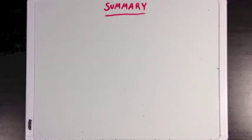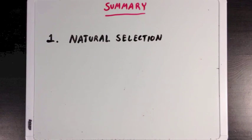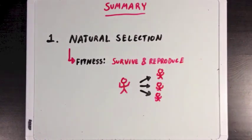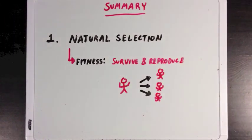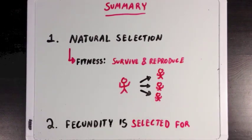So, what did we learn? First we learned that natural selection will select for individuals with traits that give them high fitness. And we can divide fitness into traits that will help with survival and traits that will help with reproduction, which are those that increase fecundity. Second, we learned that fecundity is selected for by natural selection just like any other special trait would be.